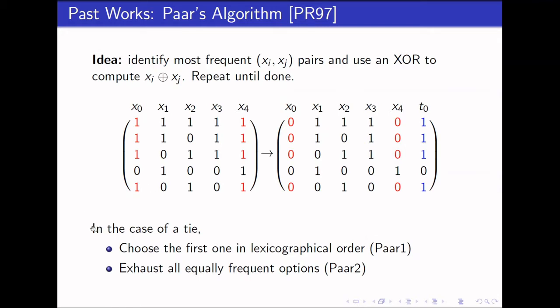So, in the case of a tie, we can choose the one in lexicographical order, and this is also known as PAR1. In the second choice, we can also exhaust all possible group options, and in that case, it will be PAR2.